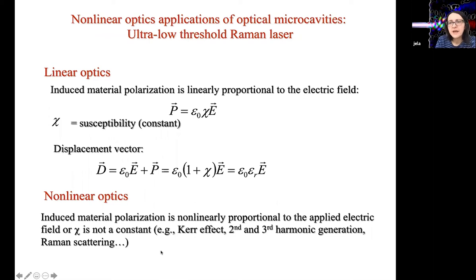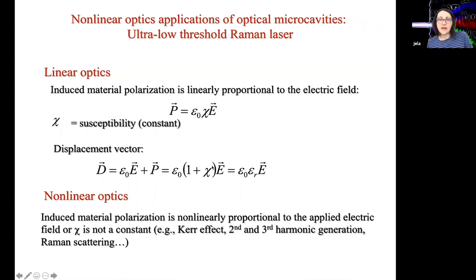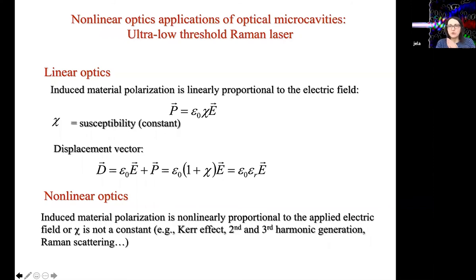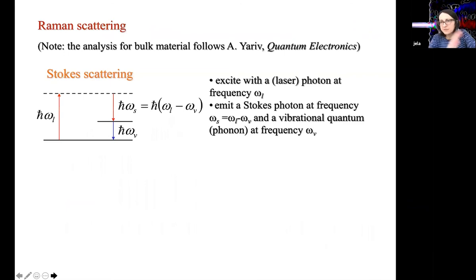If χ depends on the field, then ε depends on the field, and you will have terms that depend on the square or third power of the electric field — very different from the linear optical regime. You can have changes in the color of light: pump with one color and see another color at the output. For example, for the microsphere shown earlier, people pumped at 1550 nm. Silica has a third-order nonlinearity, which means you can produce the third harmonic of the input field. People used the third harmonic in the green (~500 nm) to image the mode of the sphere.